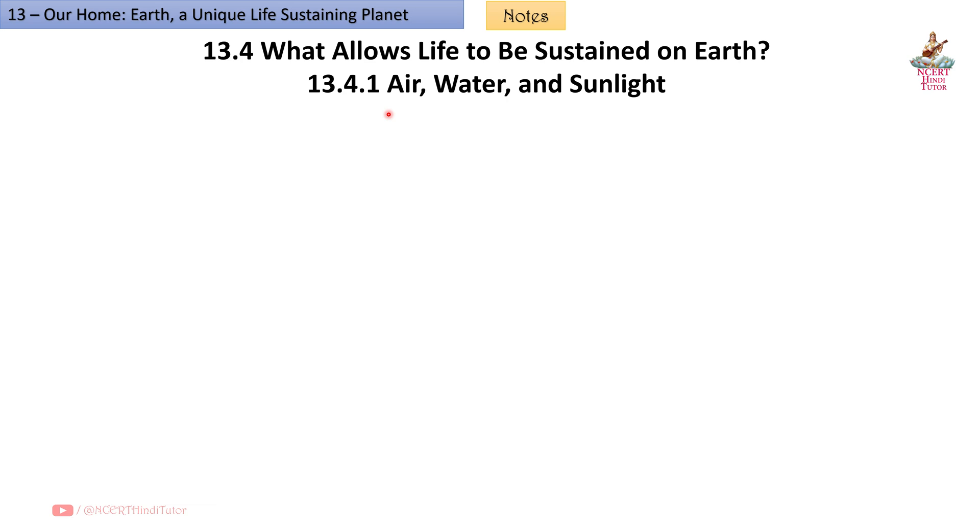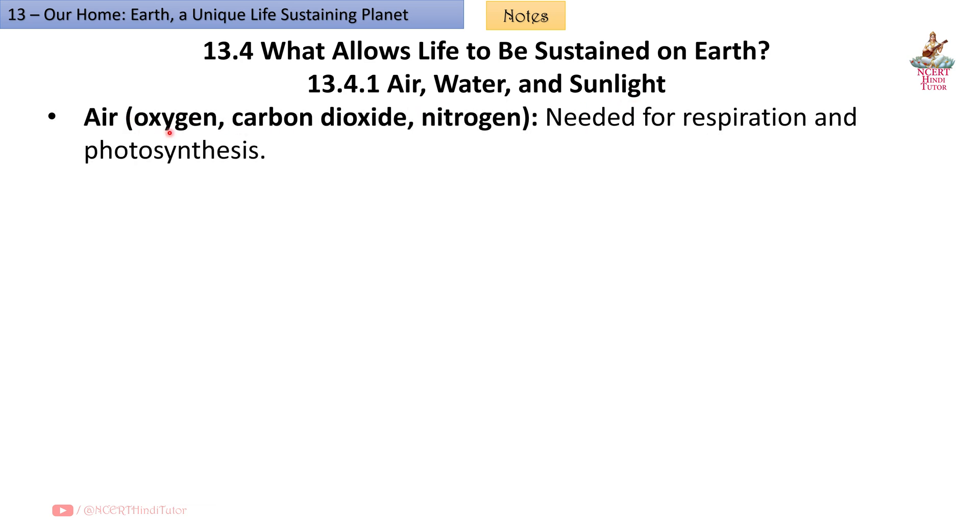13.4.1 Air, Water and Sunlight: Air (oxygen, carbon dioxide, nitrogen) is needed for respiration and photosynthesis. Sunlight provides energy for photosynthesis and warmth. The greenhouse effect maintains suitable temperature.